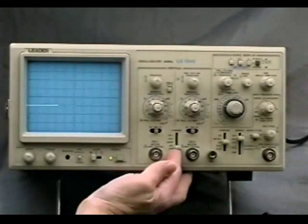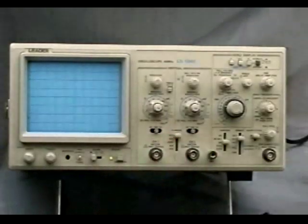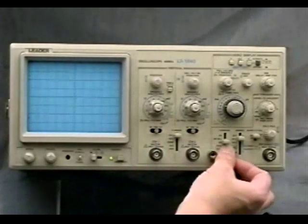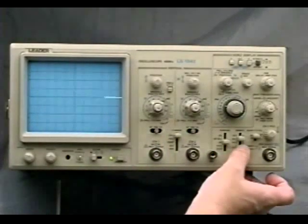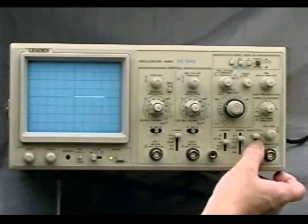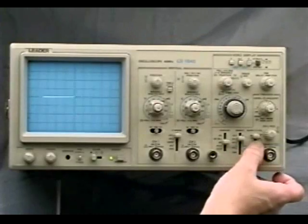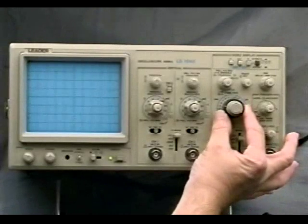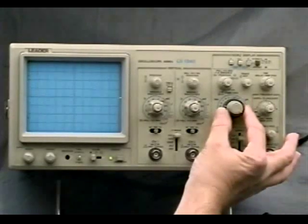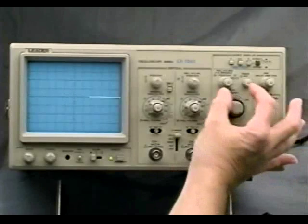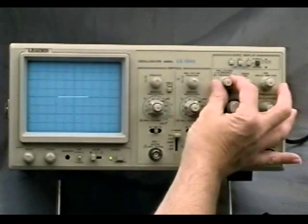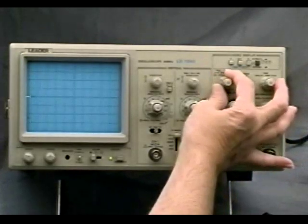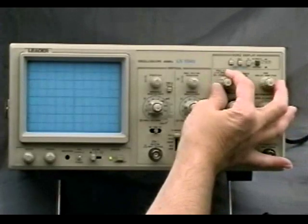We'll verify that the vertical mode switch is in the channel 1 position. We'll set the coupling switch to DC, the source to channel 1, and the slope to positive. We'll leave the horizontal sweep rate at 2 milliseconds per division for now. The horizontal position control allows us to position the trace on the screen horizontally. For now, let's just leave it in the center.